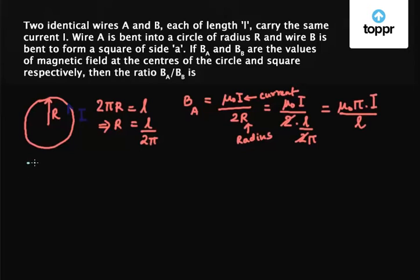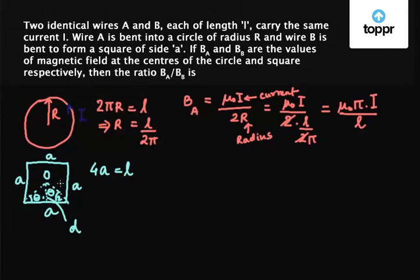Now for the case of wire B which is bent into a square of side A, we have 4 times A equals L because L is the length of this wire and A is the side of each. So let's say O is the center of this square such that it subtends angle θ₁ on this side and θ₂ here. Let's say D is the perpendicular distance from O to this side.